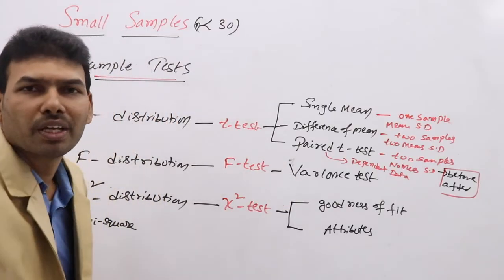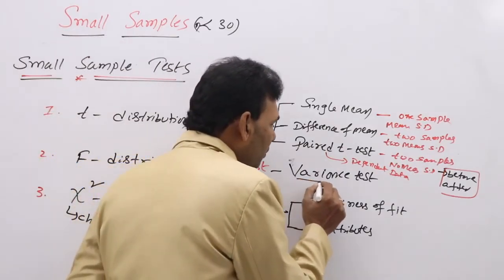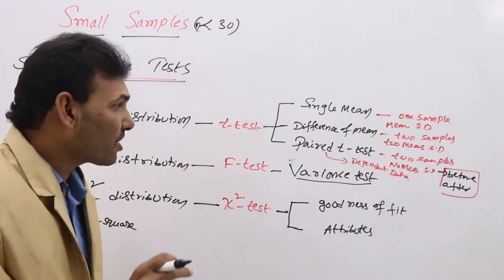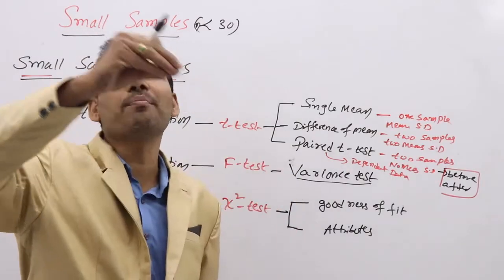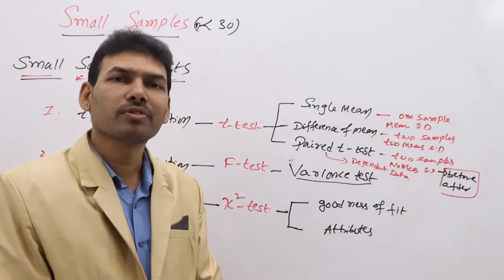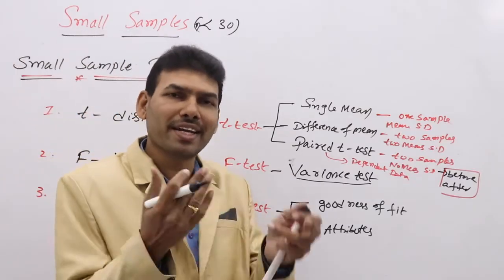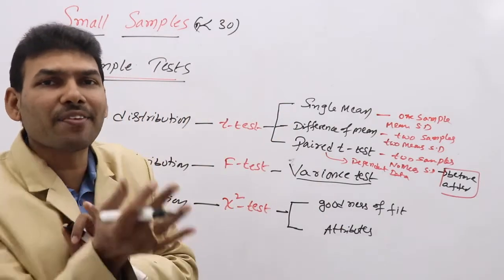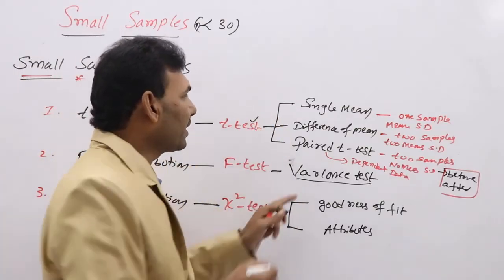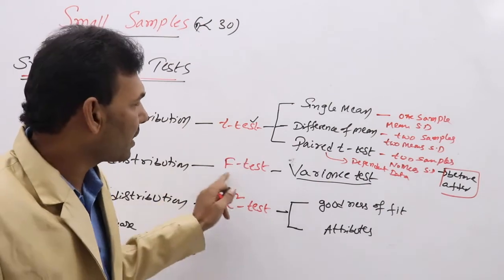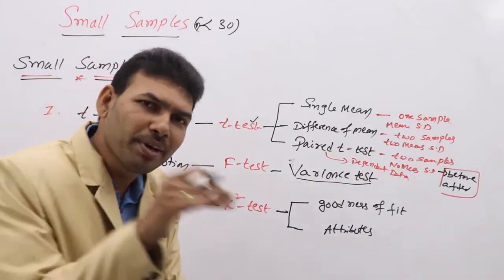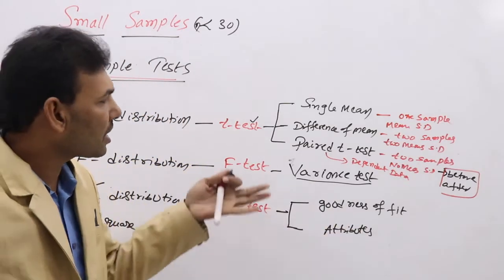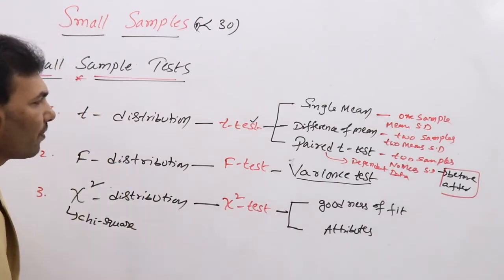Coming to variance test (F-test): if the question asks to test whether two samples came from the same normal population, you need F-test. Two samples are taken from different populations with the same mean and SD. To confirm they are from the same population, check whether they have the same means using T-test, and check whether they have the same variances using F-test. If both are same, we say they came from the same normal population.